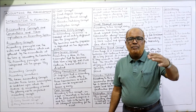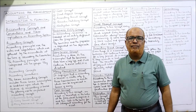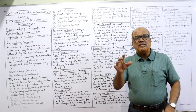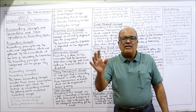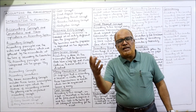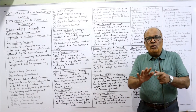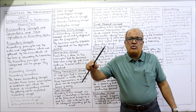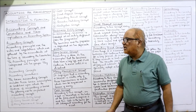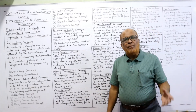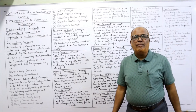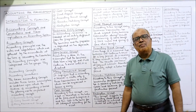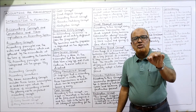Second, the going concern concept. The accountant assumes that the business is going to continue for an indefinite period of time — at least for the foreseeable future. There is neither the intention nor the necessity to wind up the business. If the business is going to be wound up in the very near future, that fact should be kept in mind while maintaining the accounts.